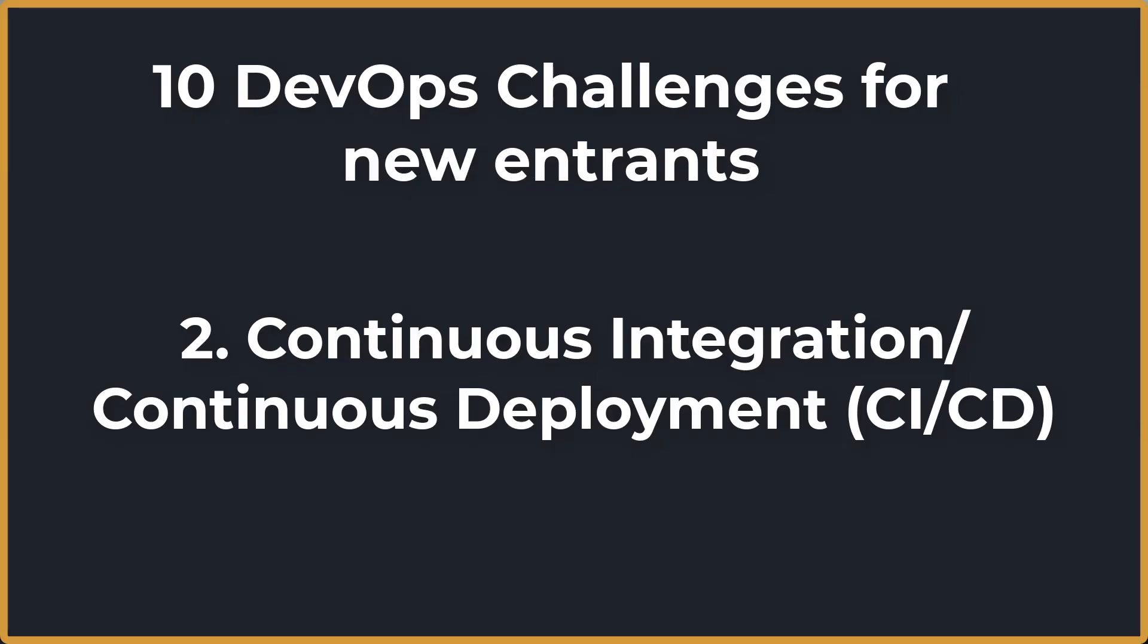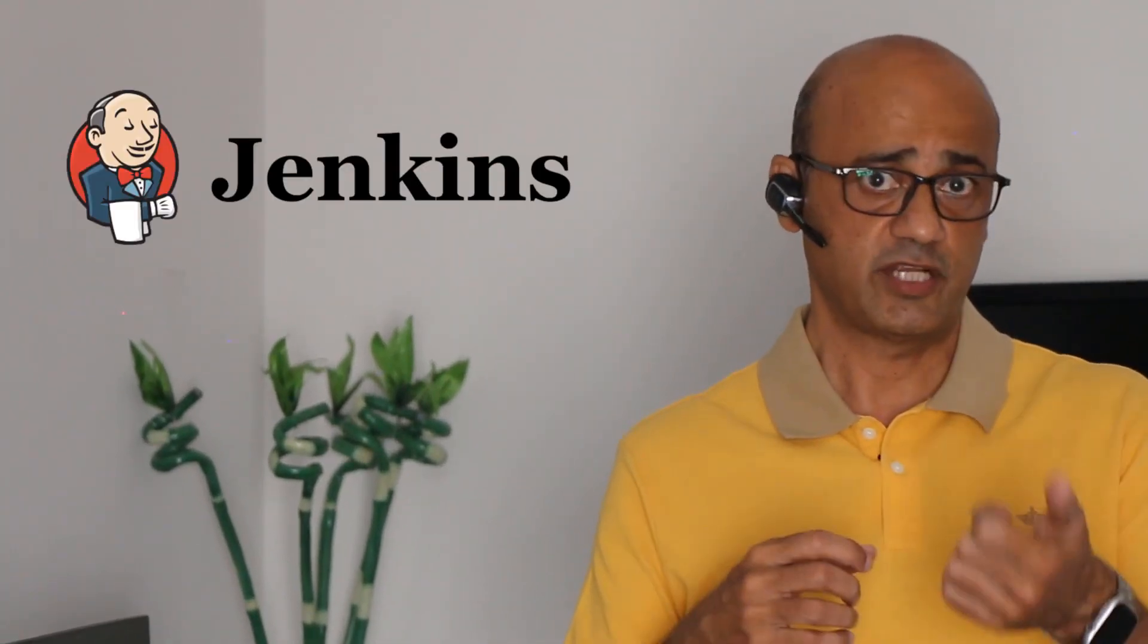Next is continuous integration and deployment, also known as CI/CD. This requires the implementation of automated testing and deployment pipelines that run on every code change. For example, a development team may use a tool like Jenkins to automatically build and test code changes with the goal of reducing the time between code change and deployment to production.